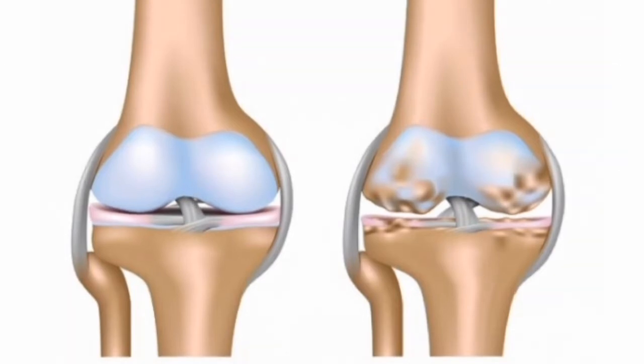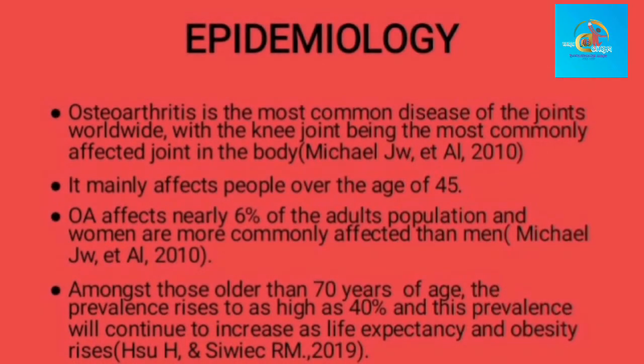Let's look at the epidemiology. Osteoarthritis is the most common disease of the joints worldwide, with the knee joint being the most commonly affected joint in the body, according to Michael JW Ita (2010). It mainly affects people over the age of 45. OA affects nearly 6 percent of the adult population, and women are more commonly affected than men. Amongst those older than 70 years of age, the prevalence rises to as high as 40 percent.